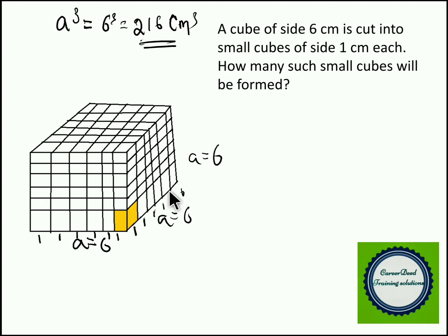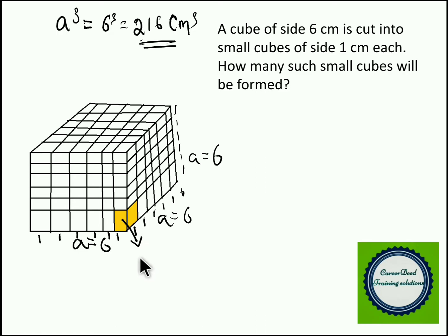On the breadth region you have to cut for 1 centimeter 5 times, and on the height also you have to cut 5 times — 1, 1, 1, 1 and 1 — totaling 6 centimeters. For your convenience, I have shaded only 1 small cube. So this cube will be 1 centimeter on each side.